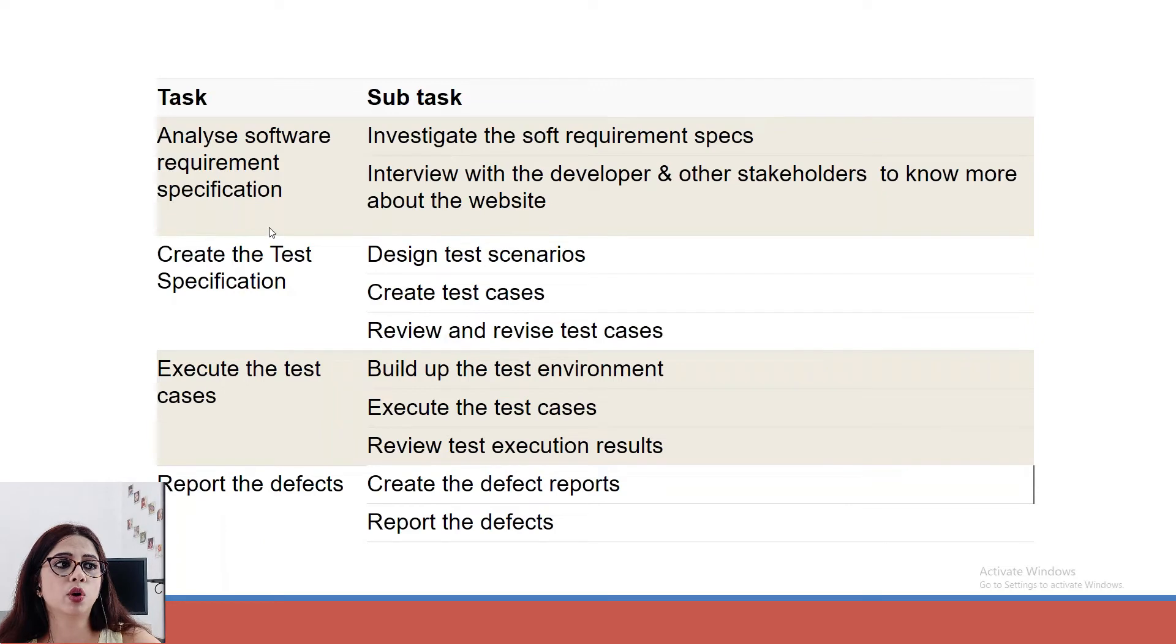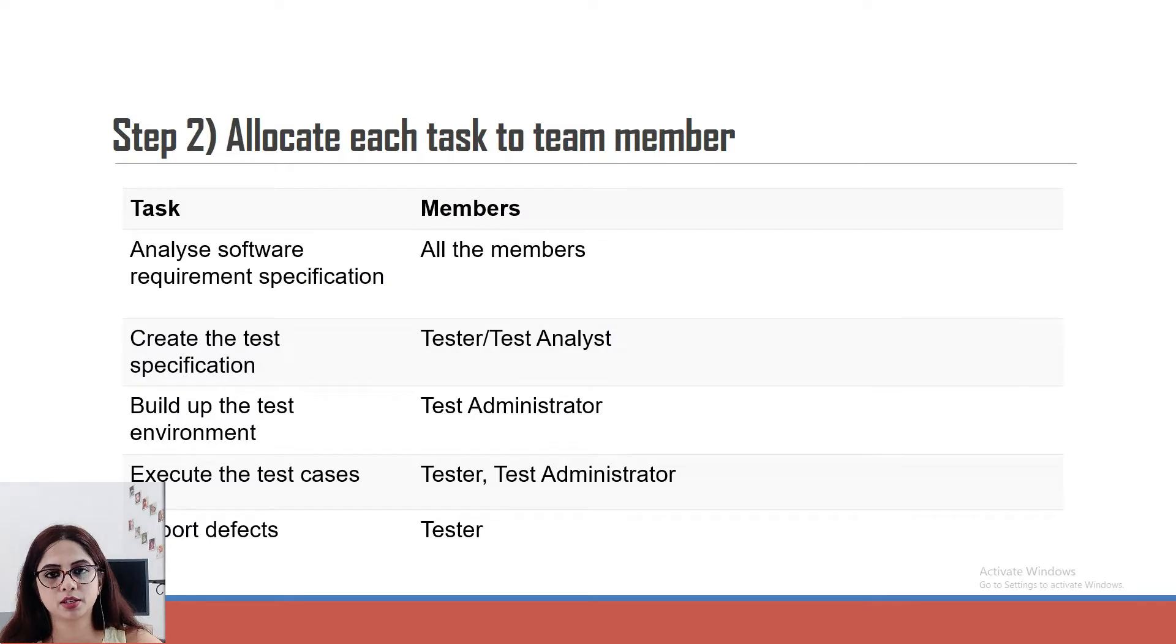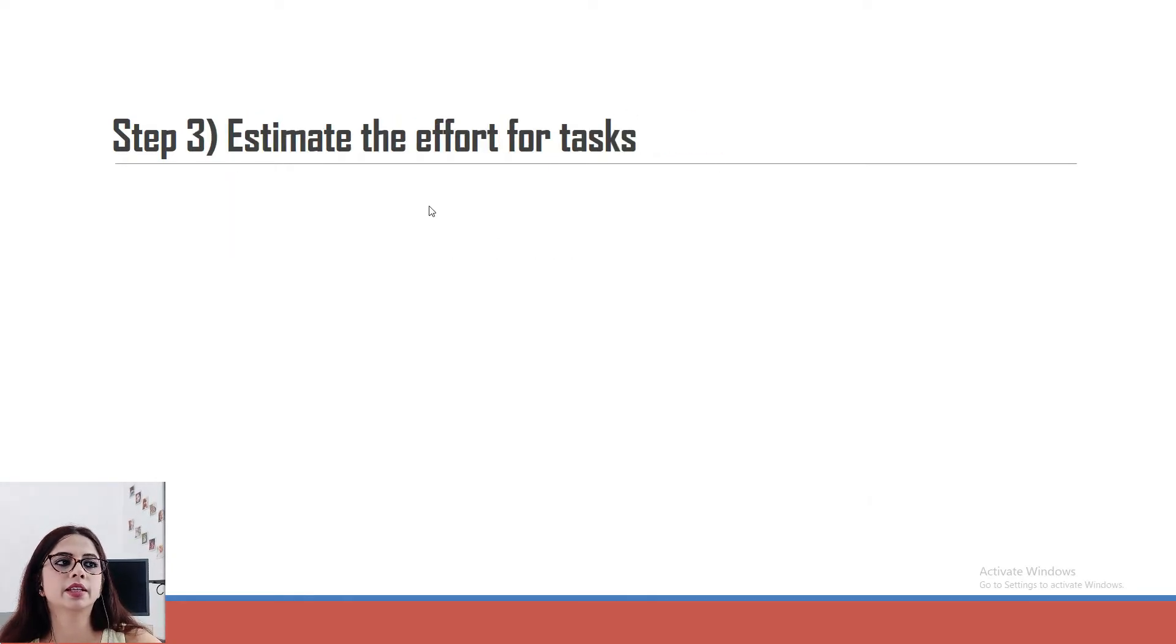If we have one task, then we can create multiple subtasks related to that one task. Step two is about work breakdown structure - you have to allocate each task to one team member or multiple tasks to one team member. Allocate each task to team members, then estimate the efforts of the task. Then you have to ask the team members to estimate how much time they need.